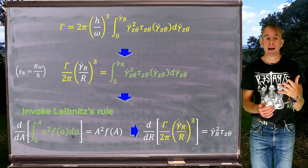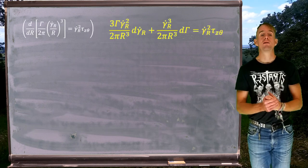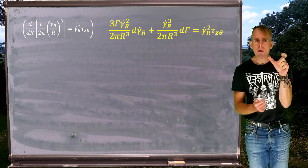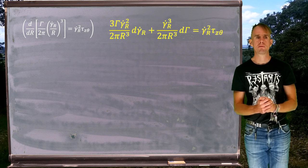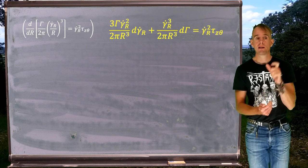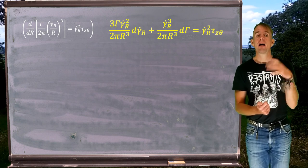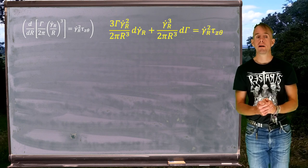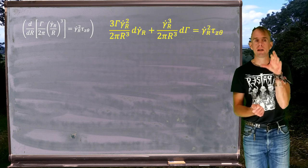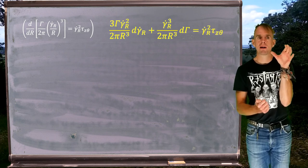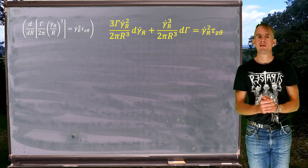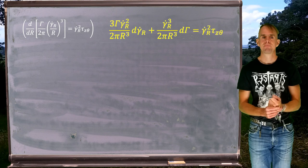We can rearrange this and apply the chain rule on the square bracket. Using the chain rule we get two terms: 3Γ·γ̇_R²/(2πR³) · dγ̇_R, and γ̇_R³/(2πR³) · dΓ. The sum of those two terms equals γ̇_R² · τ_zθ.